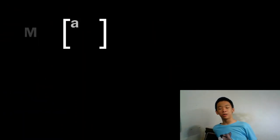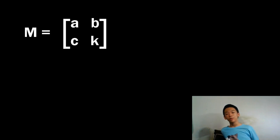What if the velocity is a linear transformation of the position vector? Suppose that there's a 2 by 2 matrix m, a, b, c, k, such that when m is applied to the position,